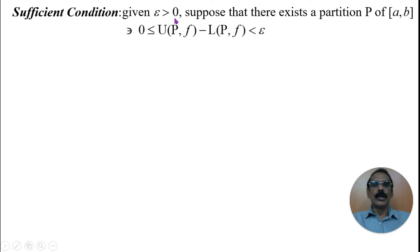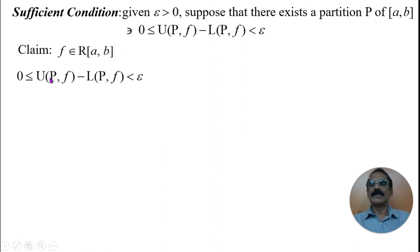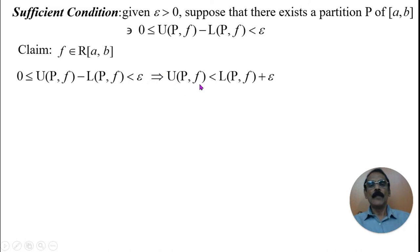We shall now prove the sufficient condition. In the sufficient condition, we are given that for epsilon > 0, there exists a partition P of [a, b] such that the difference of the upper and lower Darboux sums is less than epsilon. We have to prove that f is Riemann integrable on [a, b]. Since 0 ≤ U(P, f) − L(P, f) < epsilon is given, this implies U(P, f) < L(P, f) + epsilon.